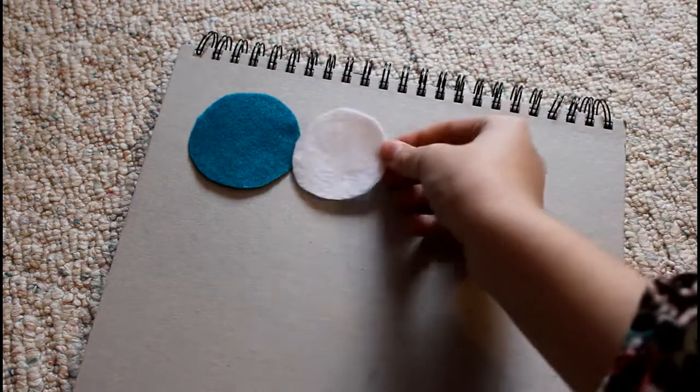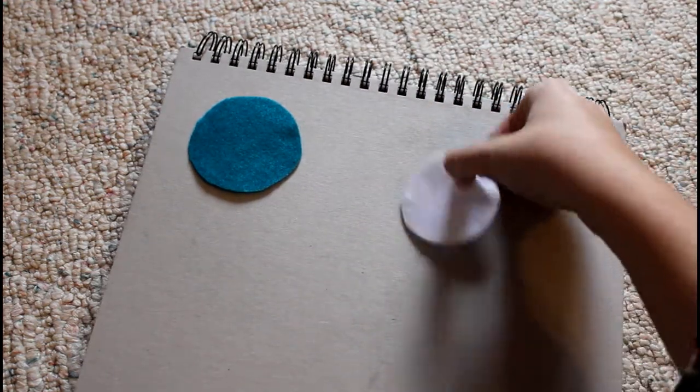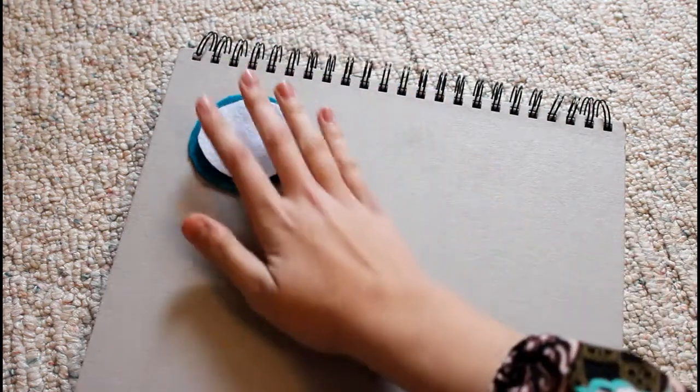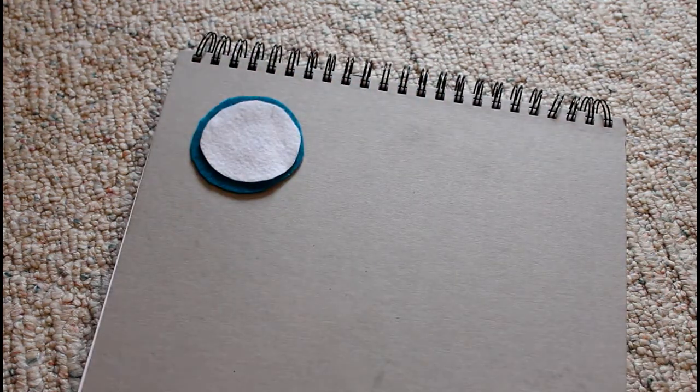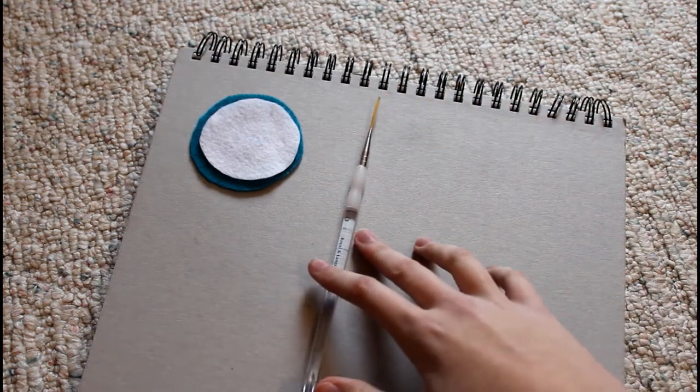Here are the supplies you will need for this. You're going to need a work surface. I'm just using the back of a sketchbook. You're going to need two circles of felt, one bigger than the other, one for your design and one for your background. You could do this any shape you want. I just usually do a circle, but you can also just paint it right on the felt so that you can cut around it.